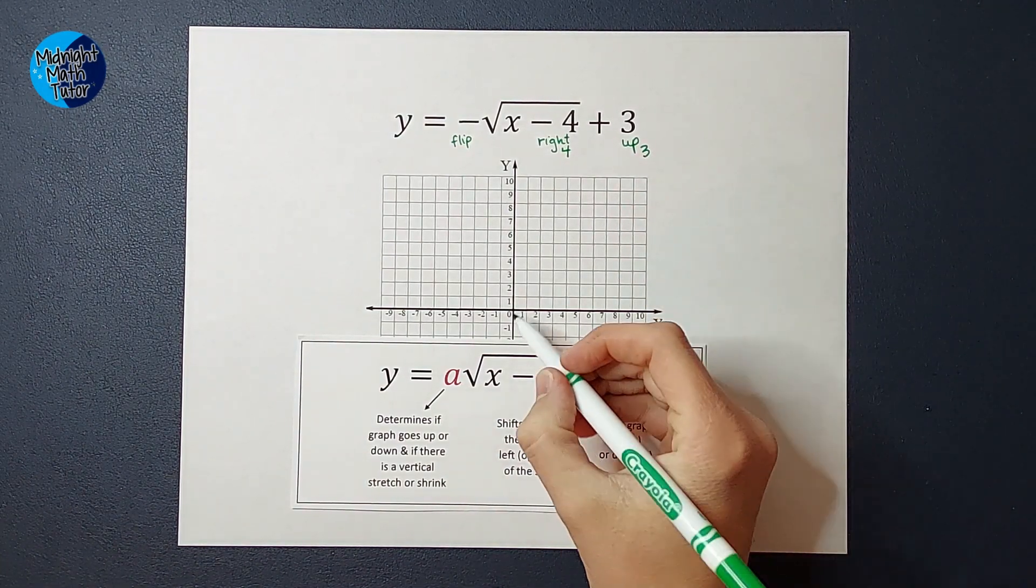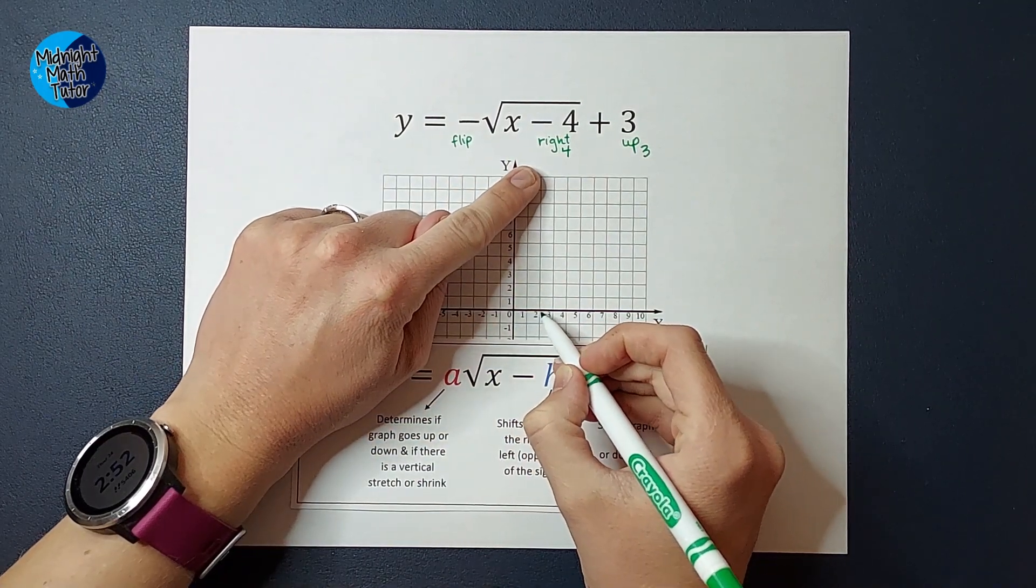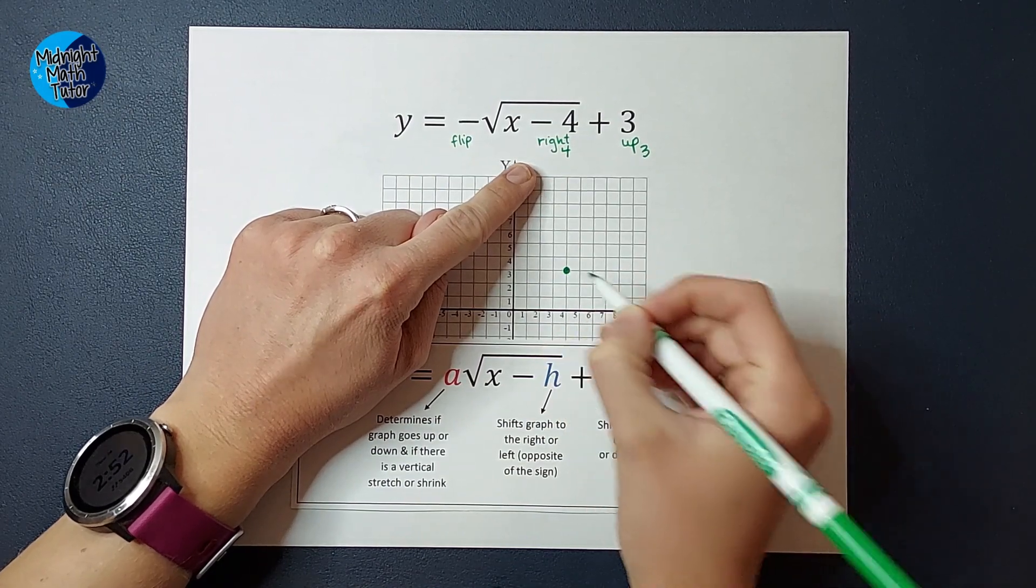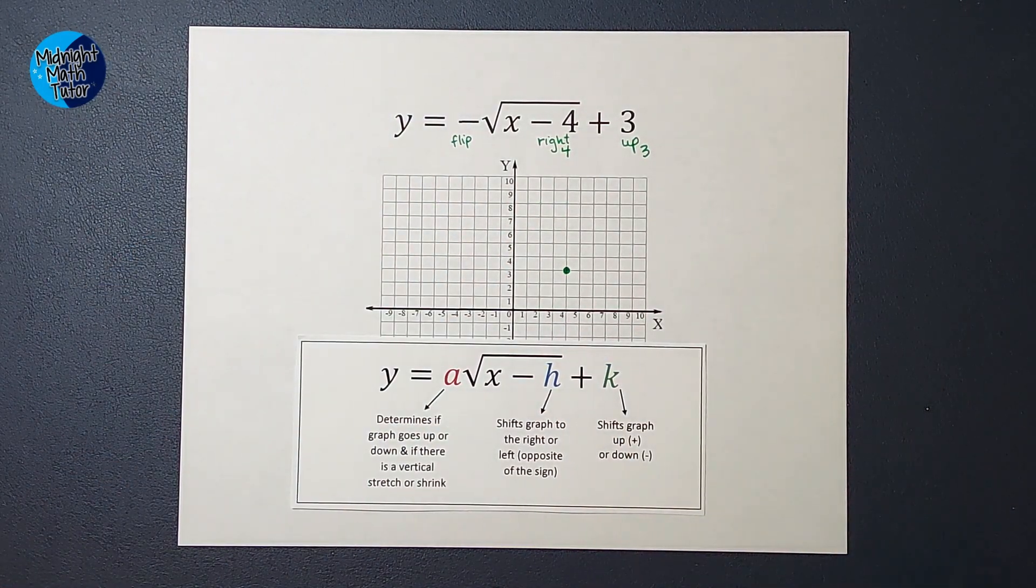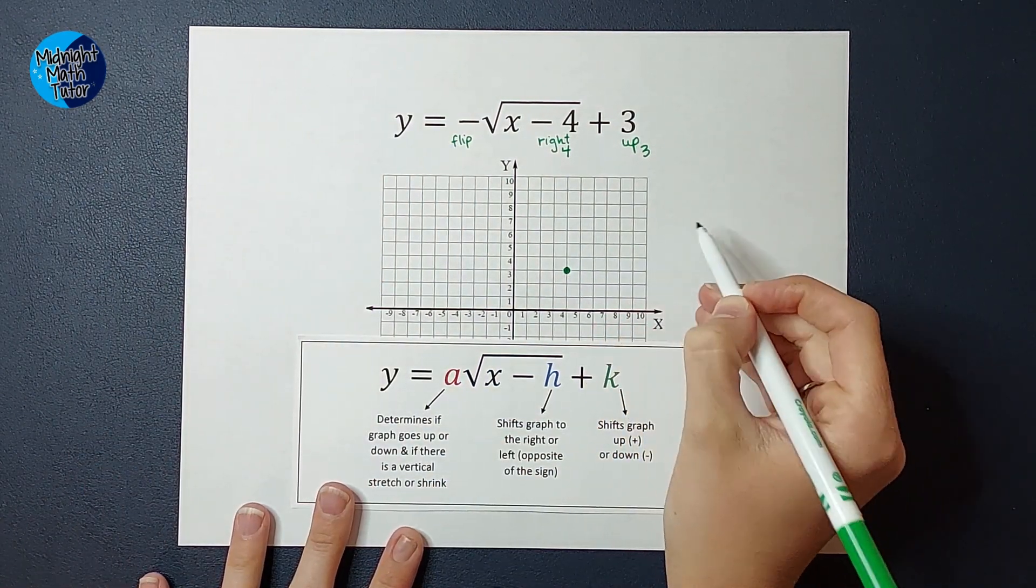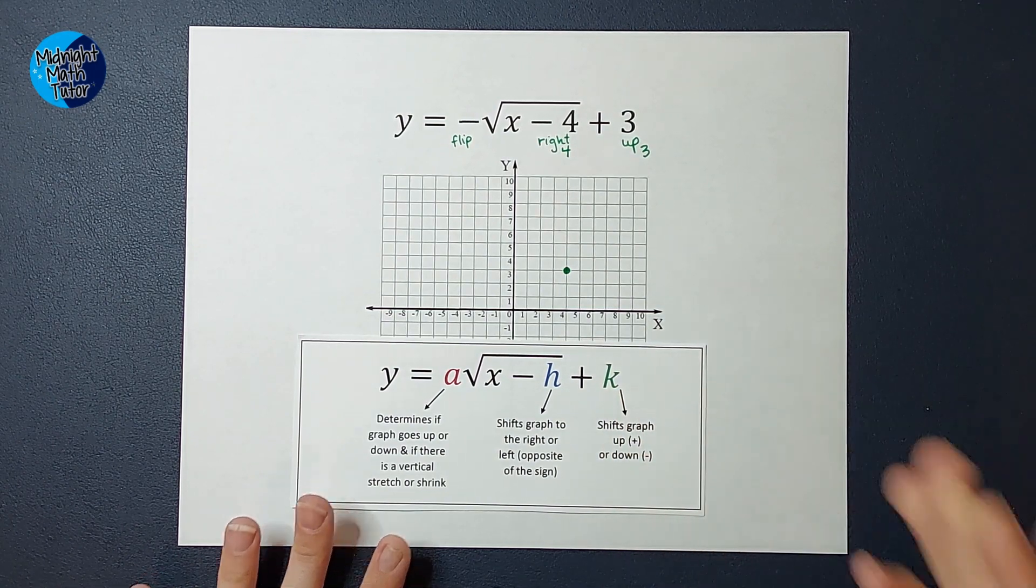So my parent graph started at 0, 0. I'm going to go to the right 4, 1, 2, 3, 4, and up 3, 1, 2, 3. So this is my new starting point. And because of that negative, I know normally it would go up and over that way, but we're going to flip it and go down and over.